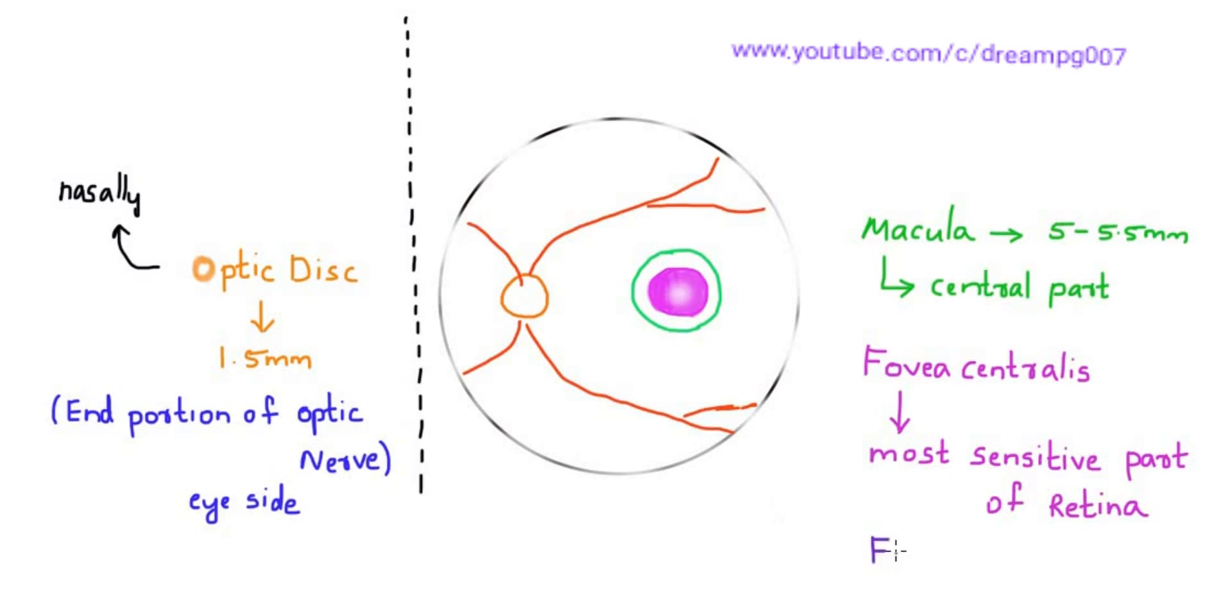A light area inside this fovea centralis is the foveola, which contains only cones. Inside the foveola we can see the umbo. The distance between the optic disc and the macula is about 2 disc diameters, that is 2 times 1.5 millimeter, which equals 3 millimeter.